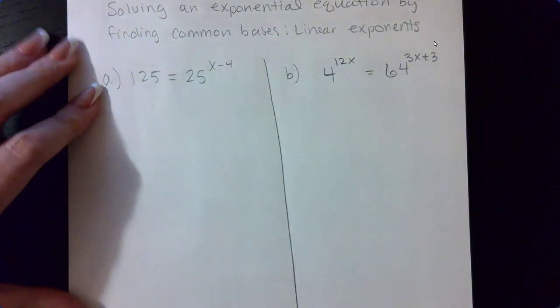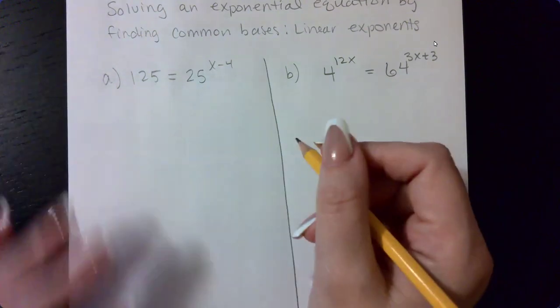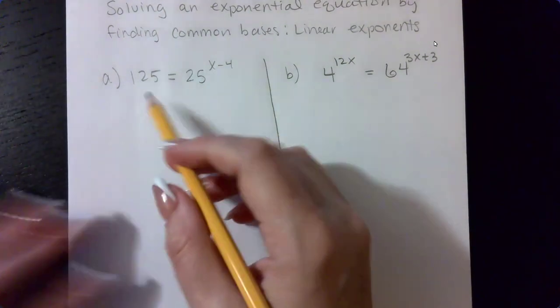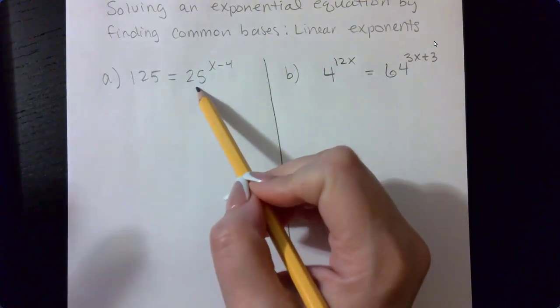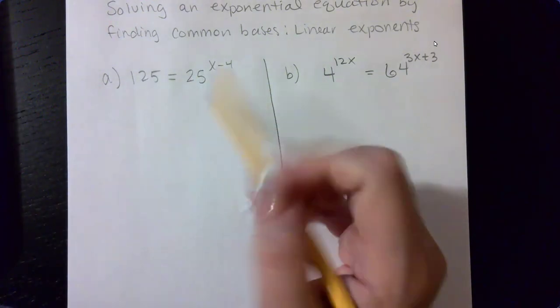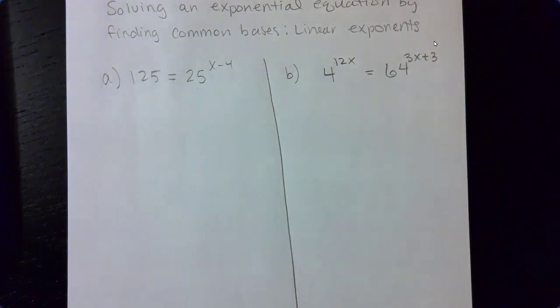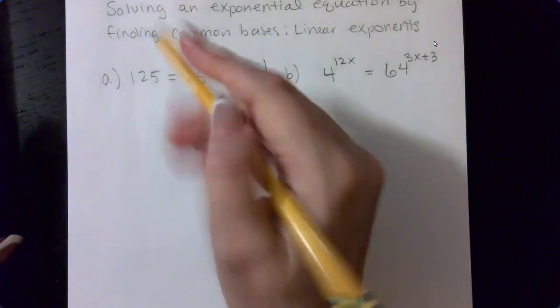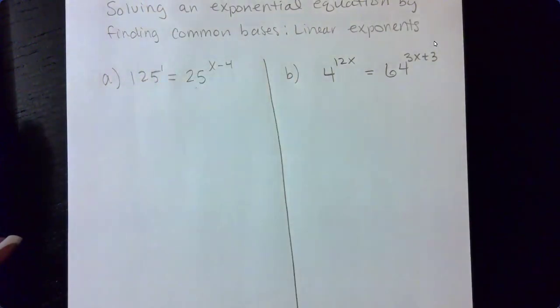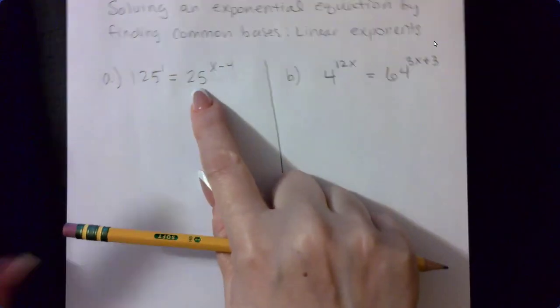It is 125 equal to 25 raised to the X minus four. You always look at the smaller base that will usually be the common base, but sometimes you have to go even smaller than the smallest base here. If I put an invisible exponent of one, my bases are 125 and 25. The smallest base is 25.